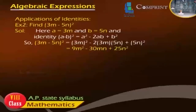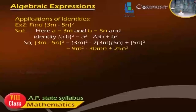Example 2: Find (3m minus 5n)². Solution: Here A equals 3m and B equals 5n, using Identity 2: (A minus B)² equals A² minus 2AB plus B². So (3m minus 5n)² equals (3m)² minus 2 × 3m × 5n plus (5n)², which equals 9m² minus 30mn plus 25n².